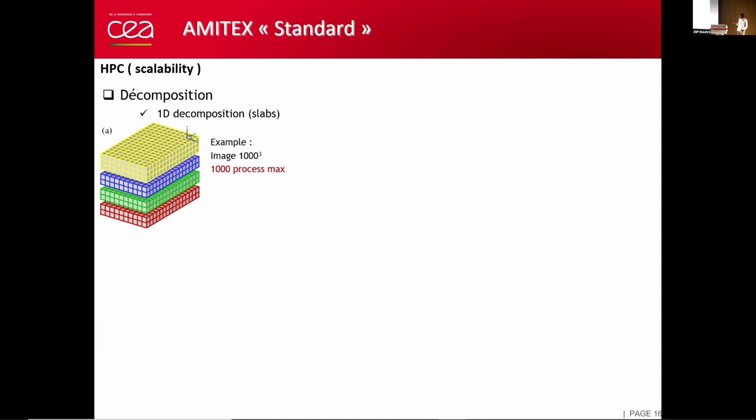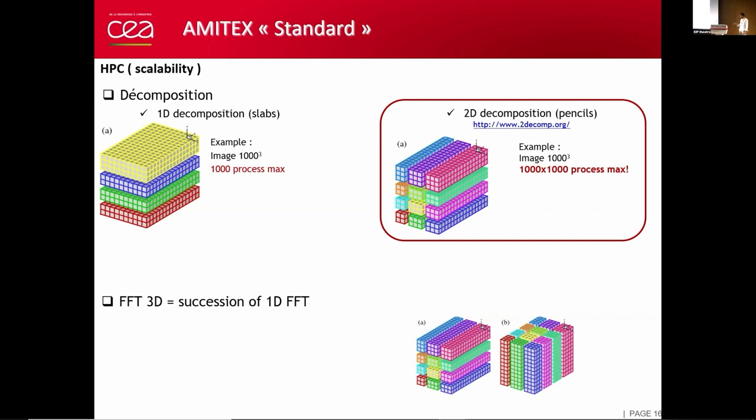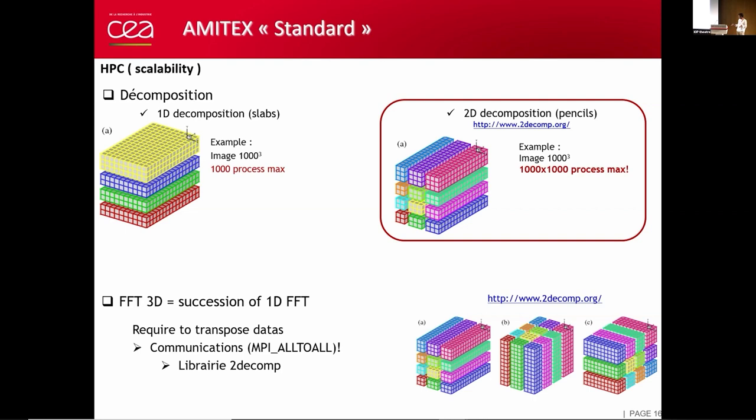The decomposition that we use is a 2D pencil decomposition of the unit cell. This is interesting because we can use more processes than with the simple slab decomposition. The problem with FFT is that 3D FFT are a succession of 1D FFT. If the pencil is in this direction, there is no problem. But in the other direction, we have to transpose the data to be able to perform the FFT in the second direction and the same for the third direction. All this stuff is done with the 2DECOMP library and MPI I/O communications.